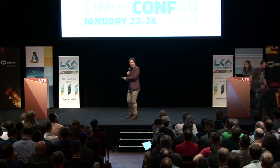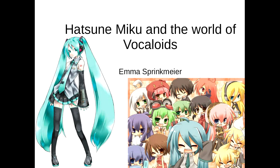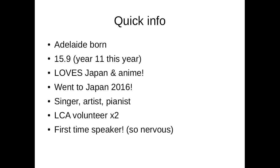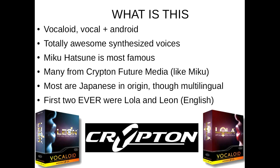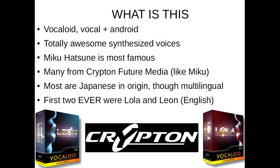So, up on deck we have Benno Rice, but first Emma Sprinkmeyer. Hatsune Miku and the world of Vocaloids. Some quick information about myself: I was born in Adelaide, I'm almost 16, and I absolutely love Japan. I am an amateur singer and artist. This is the first time I'm speaking in front of a crowd this large. Vocaloids are basically vocal androids. I really love the sounds they can make — they can go higher and lower than human speakers.